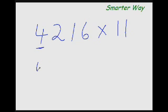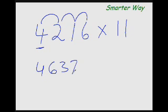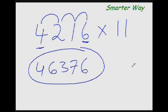So copy the first digit as it is. Next digit would be 4 + 2 is 6. Next one would be 2 + 1 is 3. Next one would be 1 + 6 is 7, and copy this 6 as it is. This is your answer.